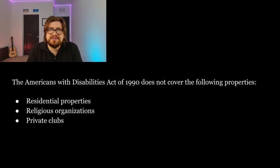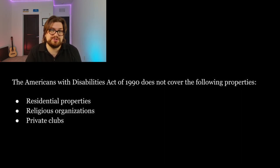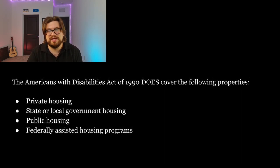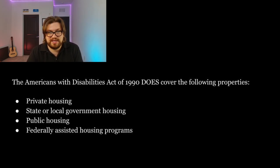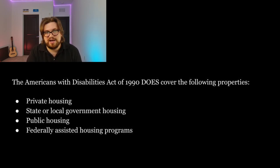What type of property is not covered by the ADA? The ADA doesn't cover residential properties, religious organizations, or private clubs. This means that privately owned homes, churches, and clubs do not have to comply with the ADA — though obviously they can, it just means they're not legally obligated to at this time.